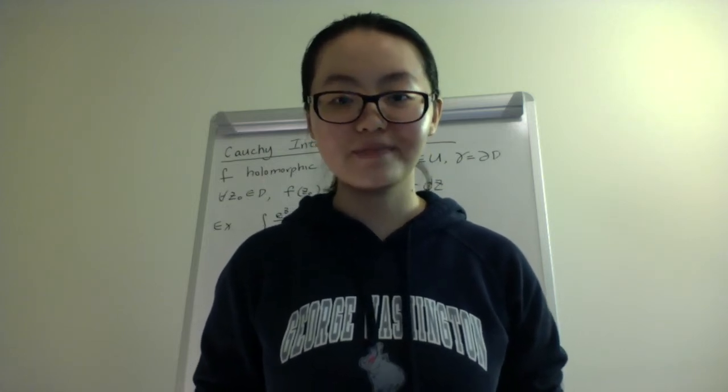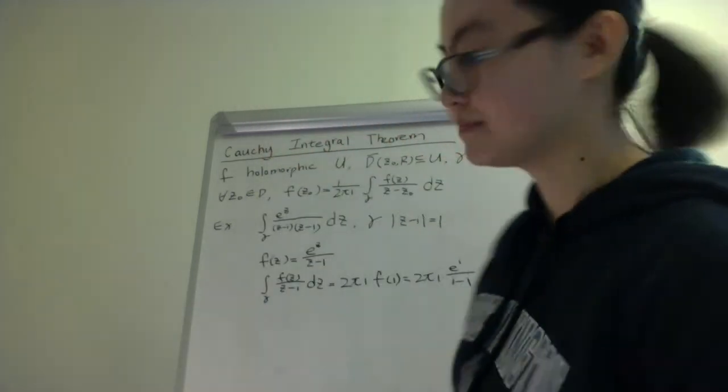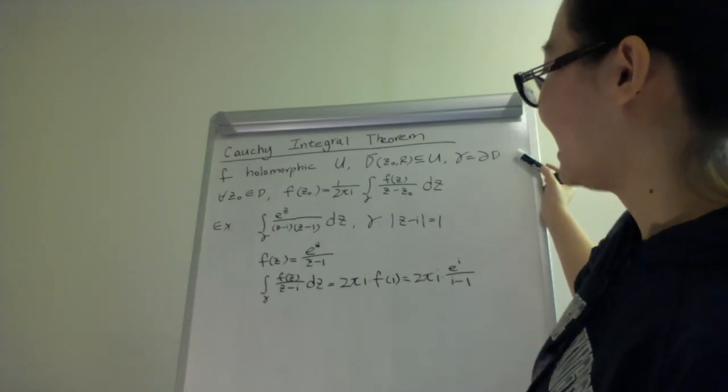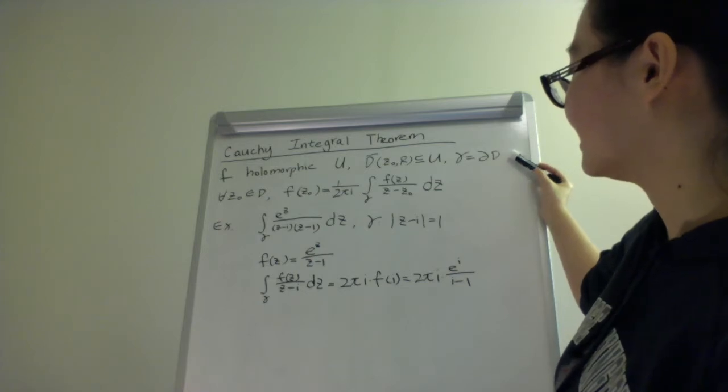Now, I will present a theorem that I learned in complex variables. It is called the Cauchy Integral Theorem. The theorem states that if f is holomorphic in a closed region u that has a disk centered at z0 and radius r, and gamma is its boundary,